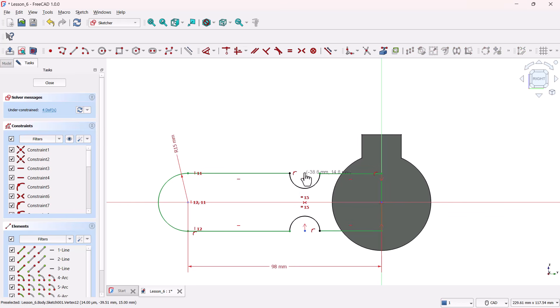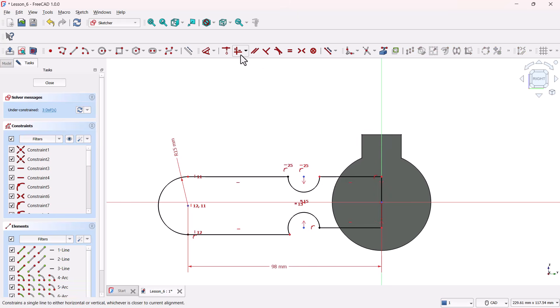Alright, so these three points here, they should be horizontal. Let's fix that. Go ahead and select all three points. Hold Ctrl to multi-select. Then, select the horizontal constraint tool from the toolbar. Now, they're locked in a straight line.